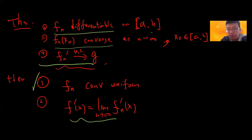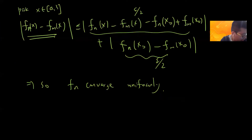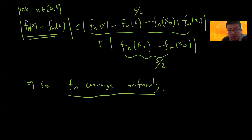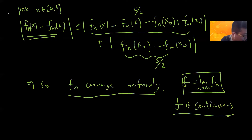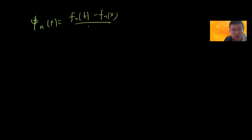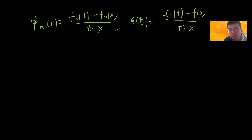Next we prove that the derivative can come in with the limit. Since fn converges uniformly, and fn is continuous (because it's differentiable), I let f be the limit of fn, and then f is continuous. Now I want to show that f is differentiable. So define φn(t) = [fn(t) − fn(x)] / (t − x), and φ(t) = [f(t) − f(x)] / (t − x). Remember that f is well defined.